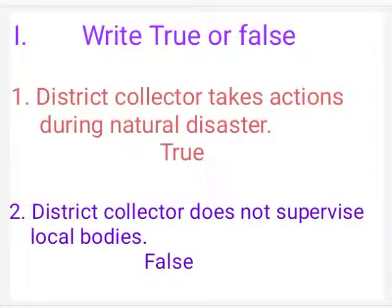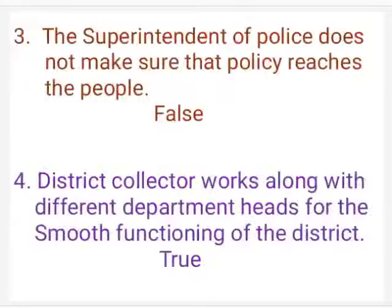Next we learn about True or False. First: the District Collector takes actions during natural disaster — True. Second: the District Collector does not supervise local bodies — False. Third: the Superintendent of Police does not make sure that policy reaches the people — False.